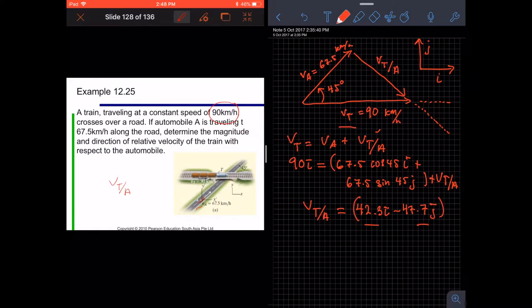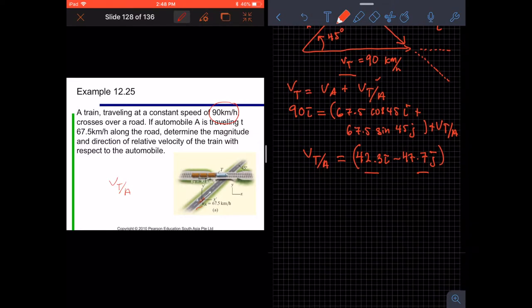From this I and J representation, we can calculate the magnitude of the velocity of the train relative to the automobile. Here we have VT equals 42.3 to the power of 2 plus 47.7 to the power of 2. We are going to get 63.8 km/h.